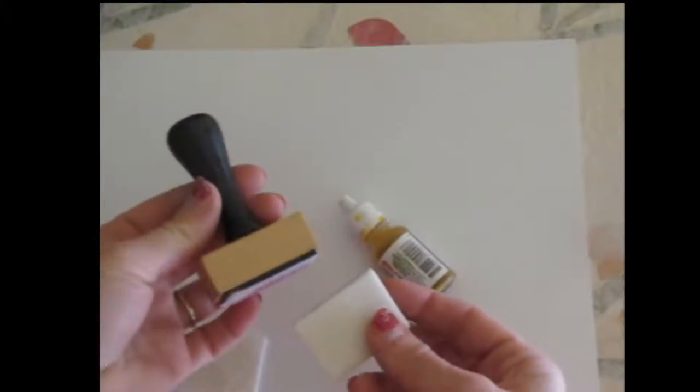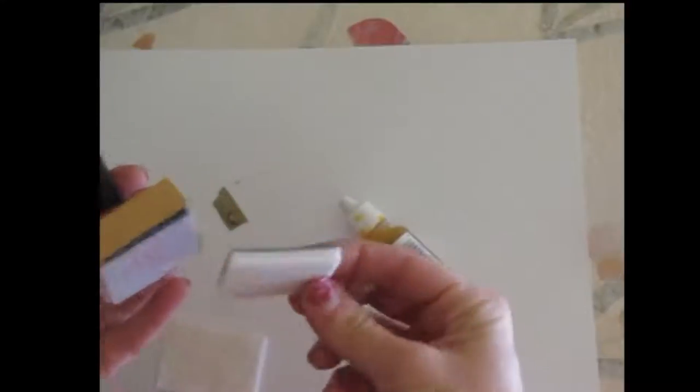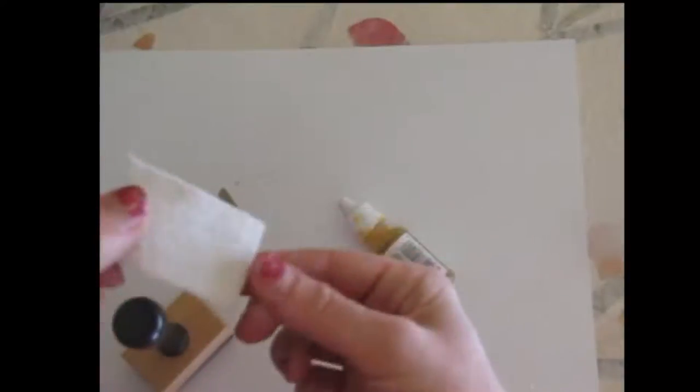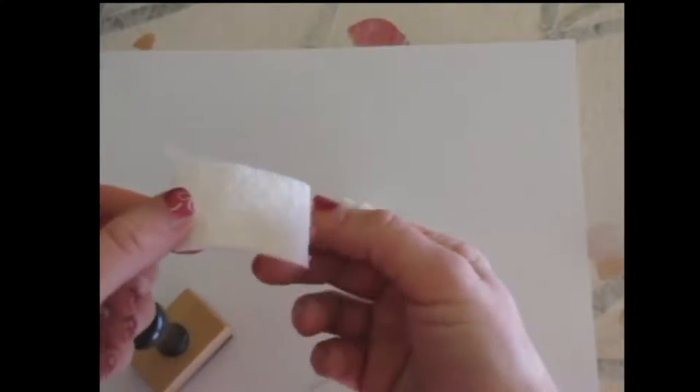So you kind of have to either come up with a way of smooshing it around. Now you probably have seen things like this. You can use these. You can use cut and dry foam. You can use cut and dry felt. You can also cut up cotton batting. It works really good.